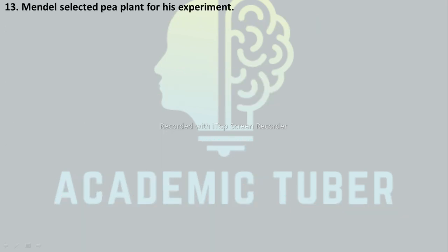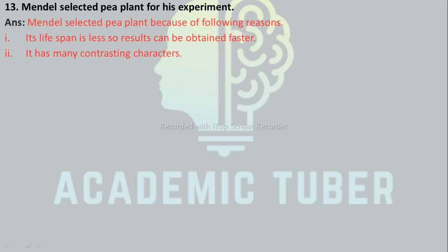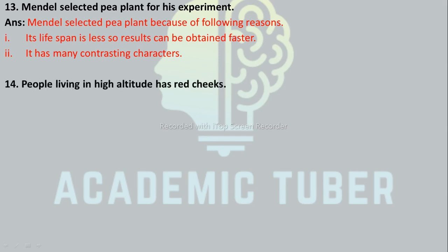Mendel selected pea plants for his experiment. Why? Mendel selected pea plants because their life span is less so results can be obtained faster, and they have many contrasting characters.